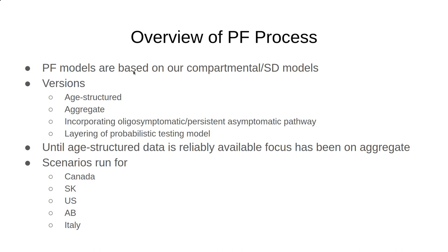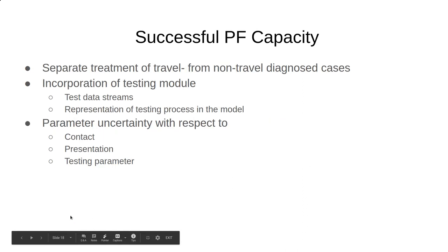There are several versions of this model: age-structured, aggregate, non-age-structured, those that have more articulated characterization of asymptomatics with differential transmissivity, and those layering in probabilistic testing models that has turned out to be of great value in interpreting the data. And we've run scenarios successfully for Canada as a whole, for Saskatchewan, for the U.S., for Alberta, and done some work with Italy as well. The Alberta, again, with Alex Doroshenko at U of A, and jointly at Alberta Health Services.